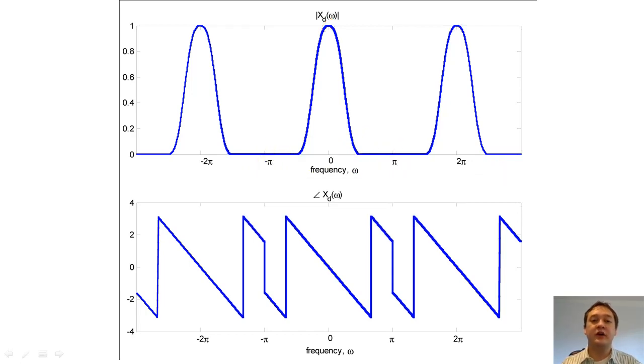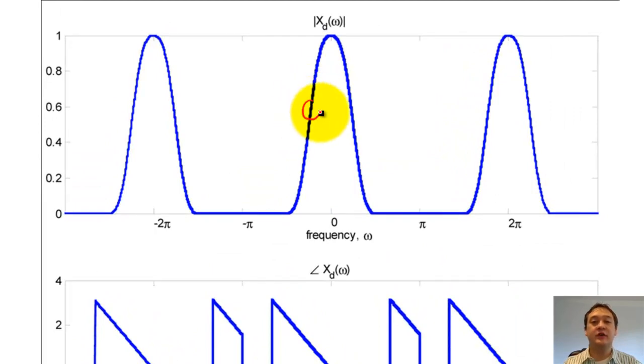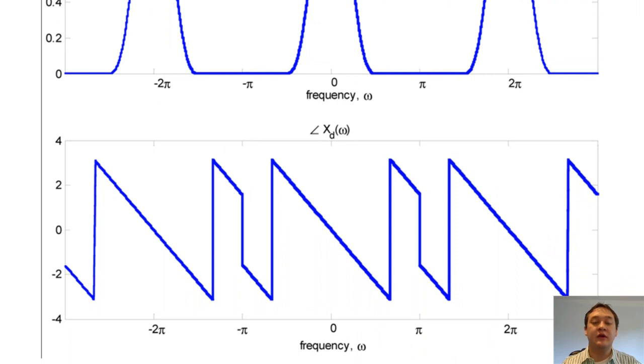This graph also shows us two important properties of the DTFT. The magnitude of the DTFT of every real signal is evenly symmetric. The phase of the DTFT of every real signal is oddly symmetric.